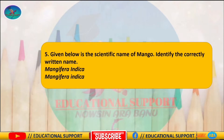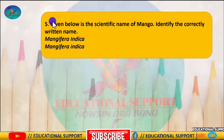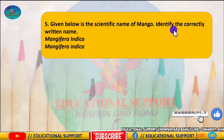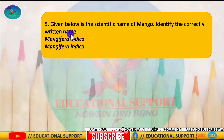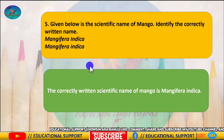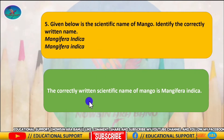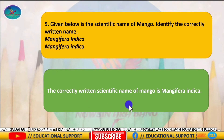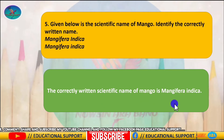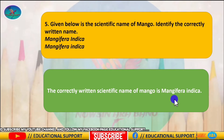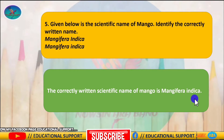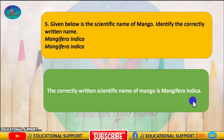Question number five: given below is the scientific name of mango — identify the correctly written name. The answer is Mangifera indica. Here, Mangifera is the genus name and indica is the species name, which is always written in lower case.